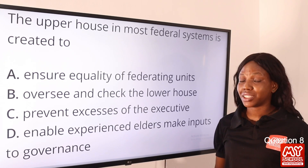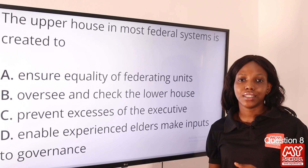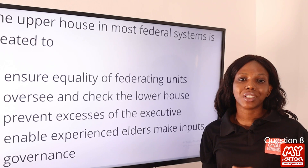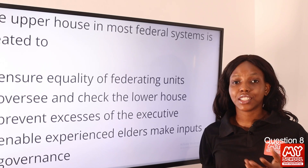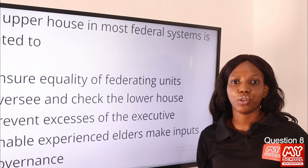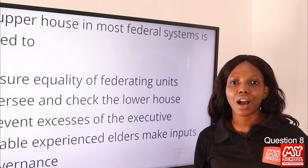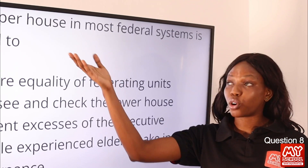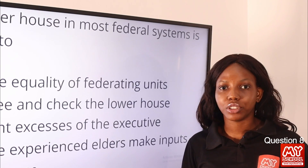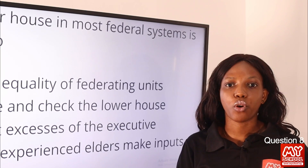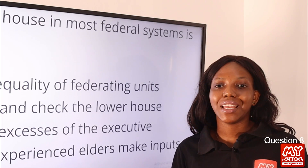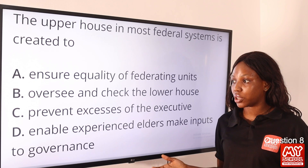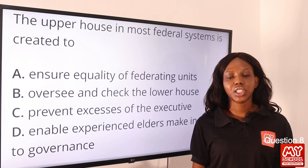The upper house is equivalent to Nigeria's or the United States' House of Senate. For the United Kingdom, the legislative body is called Parliament — with the House of Lords and House of Commons — as opposed to Nigeria's National Assembly and the United States' Congress. The House of Lords is what we call the upper house, while the House of Commons is the lower house. The upper house reviews and thoroughly examines the activities of the executive to ensure accountability. So option C, prevent excesses of the executive, is the final answer.